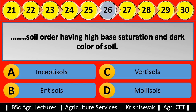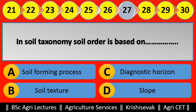Question 26: Blank soil order has high base saturation and dark color. Options include Mollisols. Right answer is Mollisols. Question 27: In soil taxonomy, soil order is based on blank. Options are: (a) Soil forming process, (b) Soil texture, (c) Diagnostic horizon, (d) Slope. Right answer is Soil forming process, option A.